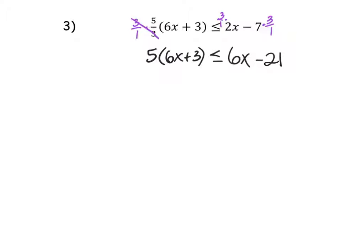Good, good. Now I have to distribute to get rid of that. So let's do that. 30x plus 15 less than or equal to 6x minus 21.